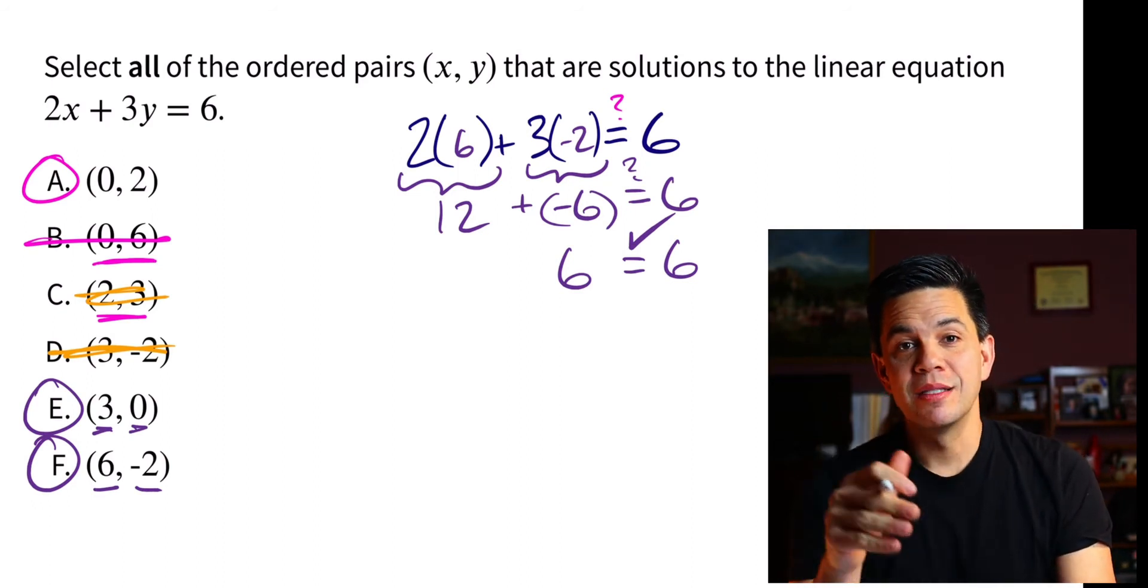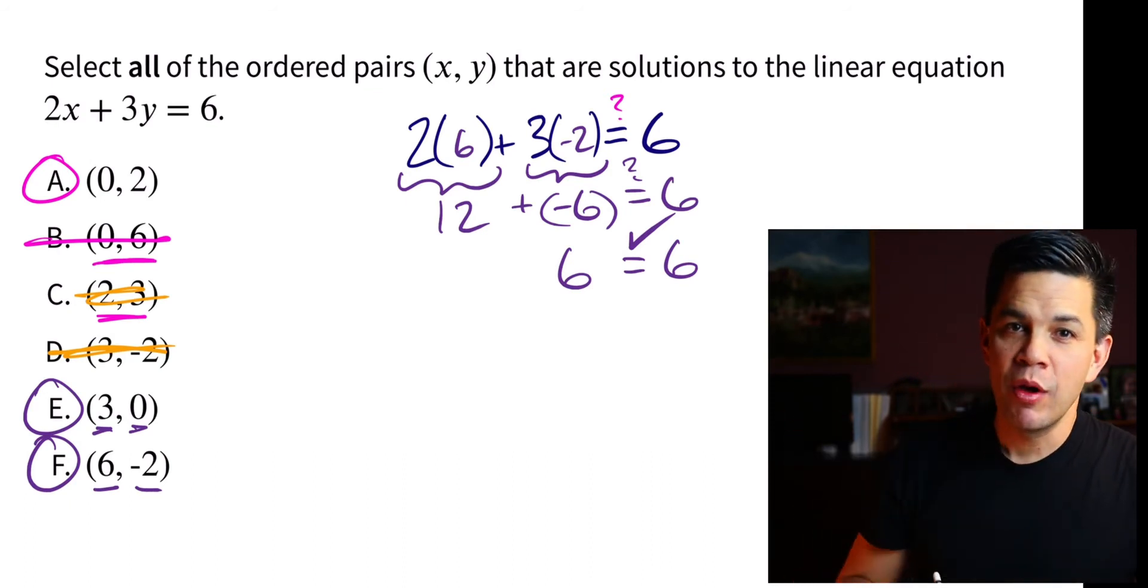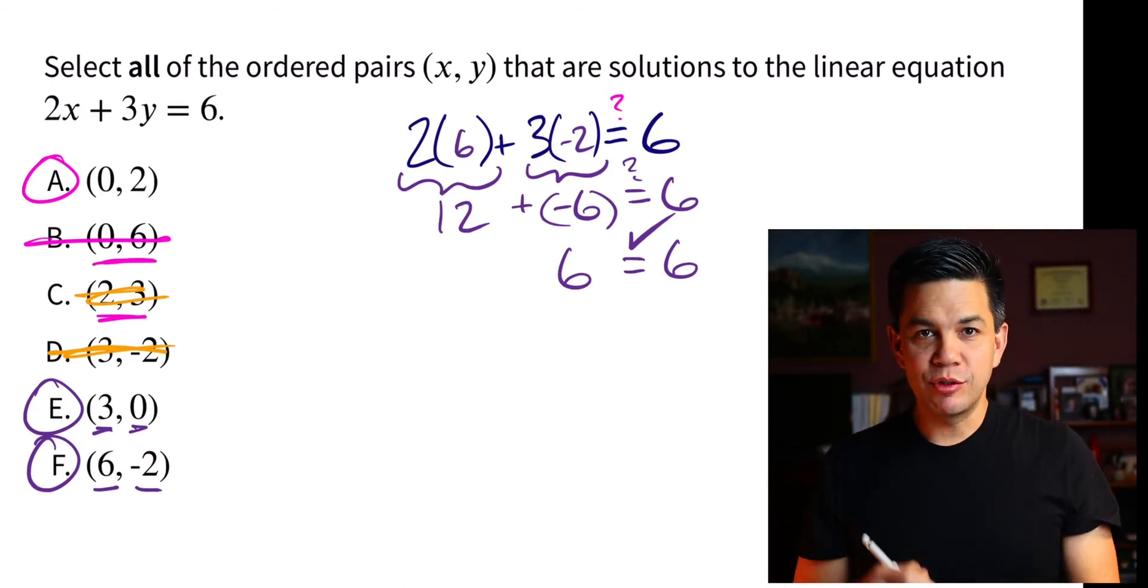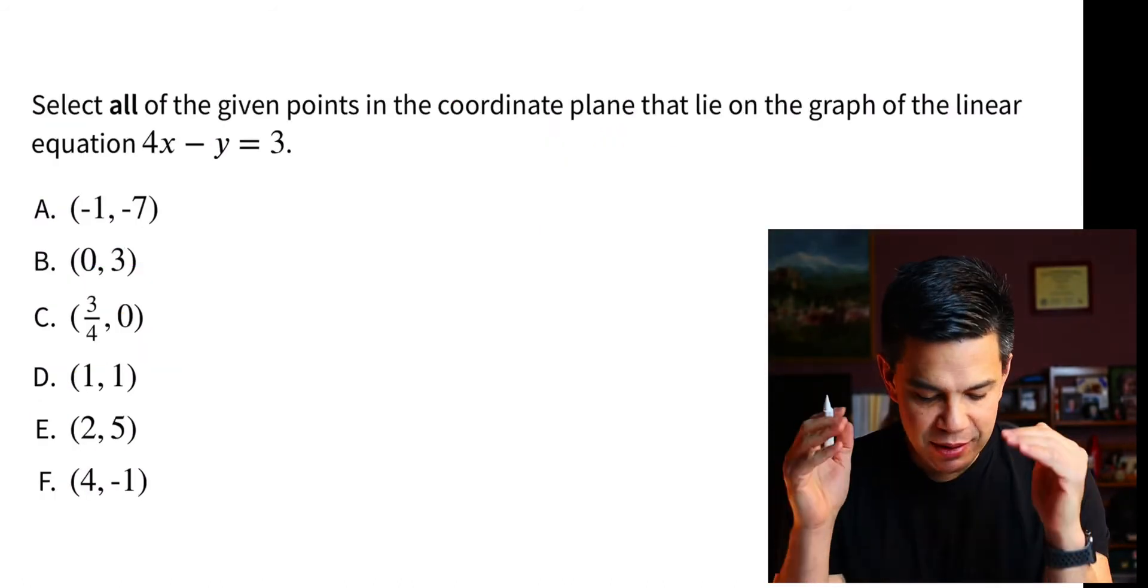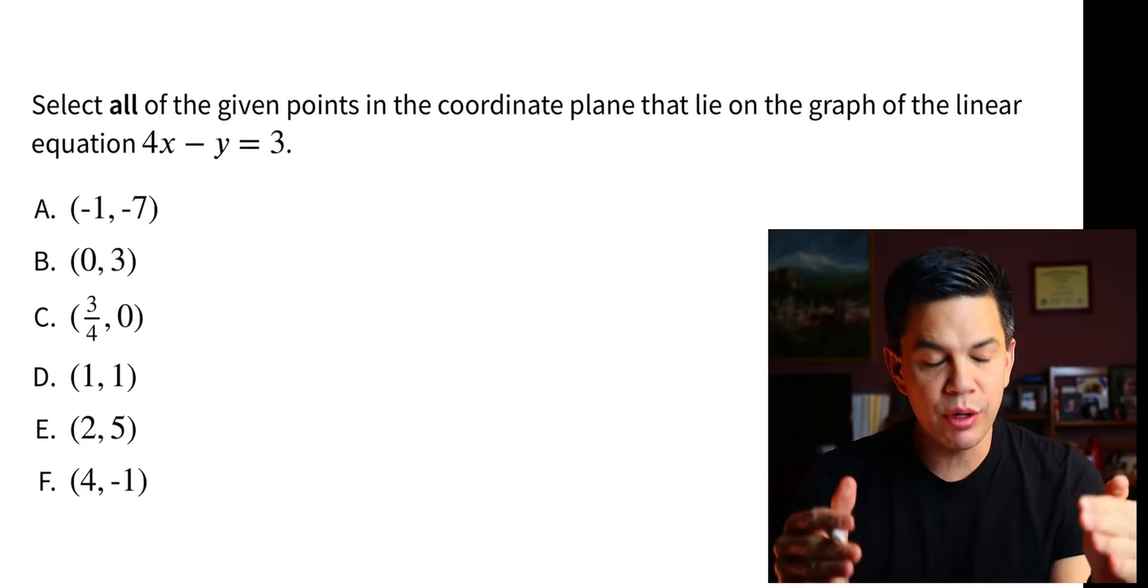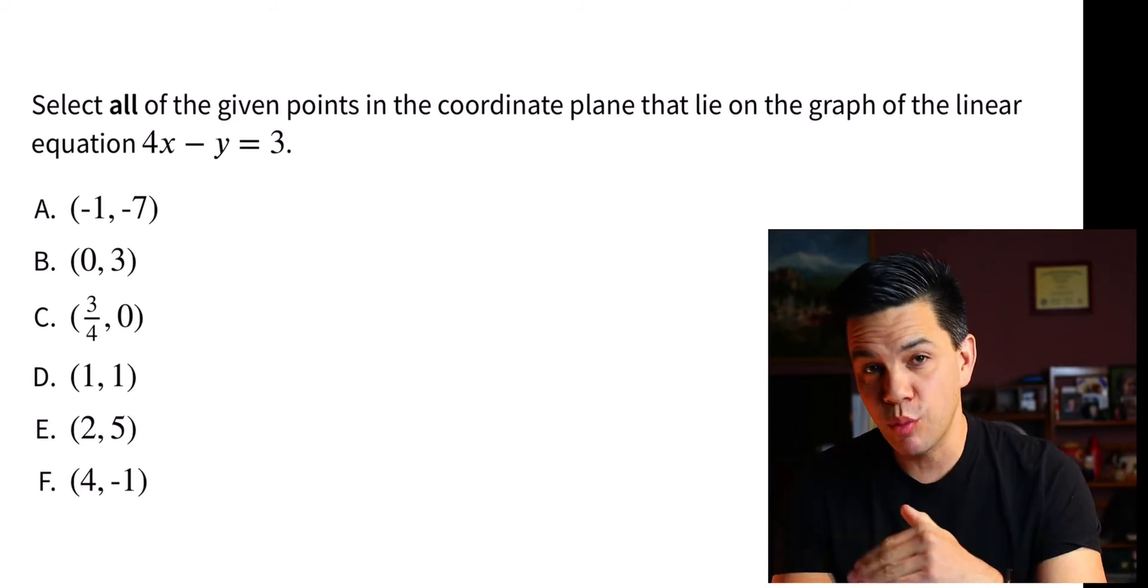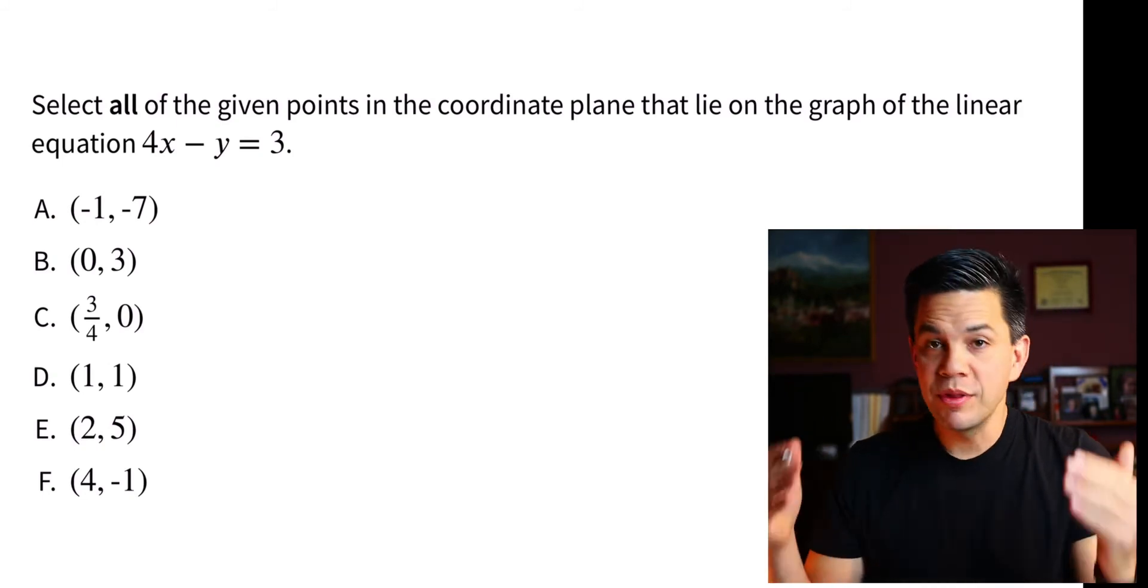All right, sweet. So one down, one to go. I've got one more problem just like this. Let's jump right into it. All right. This next problem, select all the given points in the coordinate plane that lie on the graph of the linear equation 4x minus y equals 3. All right, so the same deal.